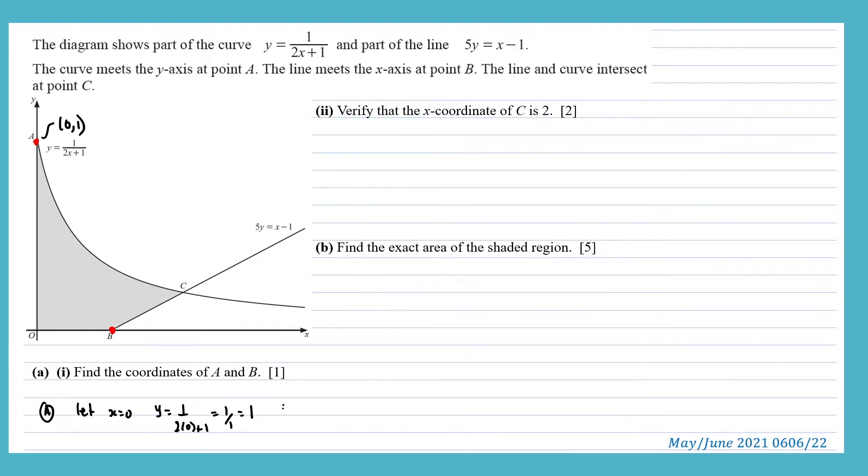For point B, we will let y equals 0. So we'll get 5 times 0 equals x minus 1. So x equals 1. So this is the coordinate 1, 0.